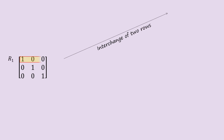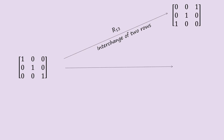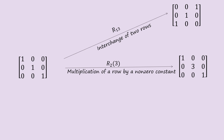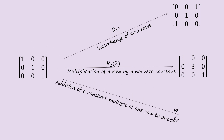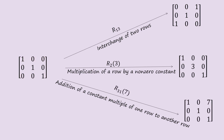Let's apply the E-row on a 3×3 identity matrix. The first operation is interchange of two rows — say R1 and R3, giving R13. For the second operation, we multiply R2 by 3, giving R23, so only row 2 changes. For the third operation, we add R1 to 7 times R3, written R317.